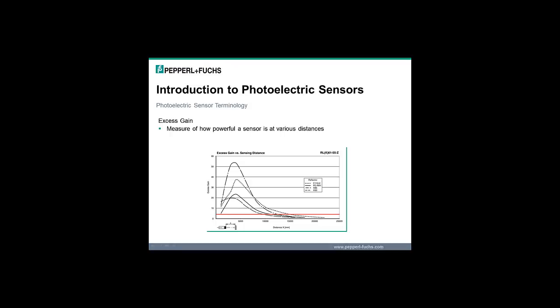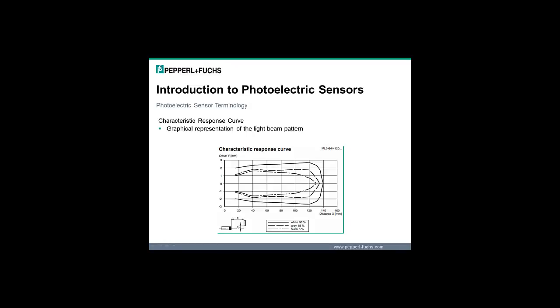Excess gain is a means of measuring how powerful a photoelectric sensor is at various distances. Excess gain does not have units of measurement; rather it is a ratio defined as the amount of light at the receiver versus the amount of light required to change the output state. A characteristic response curve provides users with a graphical representation of the light beam pattern. Due to the nature of light, the beam is symmetrical in three-dimensional space, although it is shown in just two dimensions. These graphs are simple guidelines and should not be used as precise values, but they can be used as a means of estimating the sensor's light beam diameter and lateral switching points.